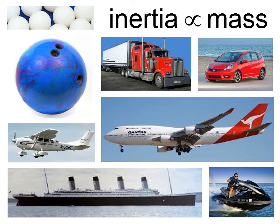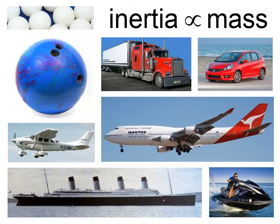If you compare a bowling ball with a ping pong ball, it's much easier to get a ping pong ball moving because it has very little mass and very little inertia — but it's also very easy to stop it moving. A bowling ball is much more difficult to start moving and much more difficult to stop. Same thing with a large vehicle compared to a small vehicle — much easier to get the small vehicle up to speed and stop it. A large airplane has a lot of inertia and tends to have a smoother ride, while a small airplane with much less mass and inertia will be more turbulent and bumpy.